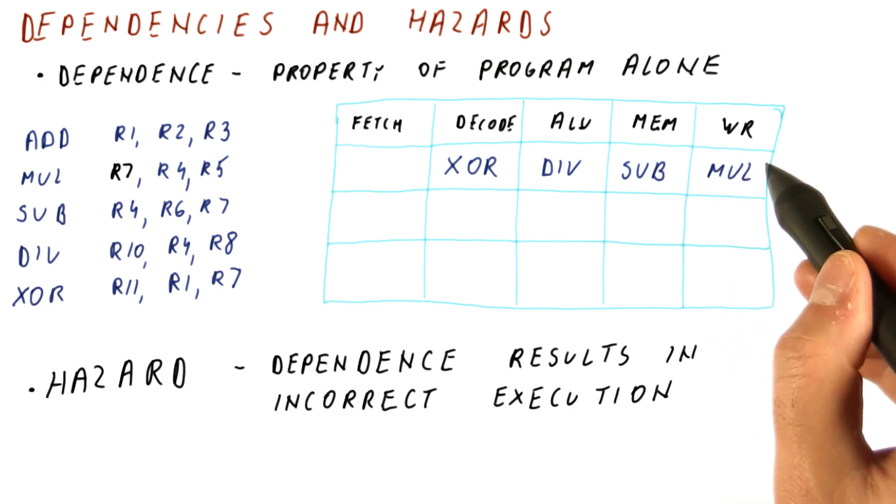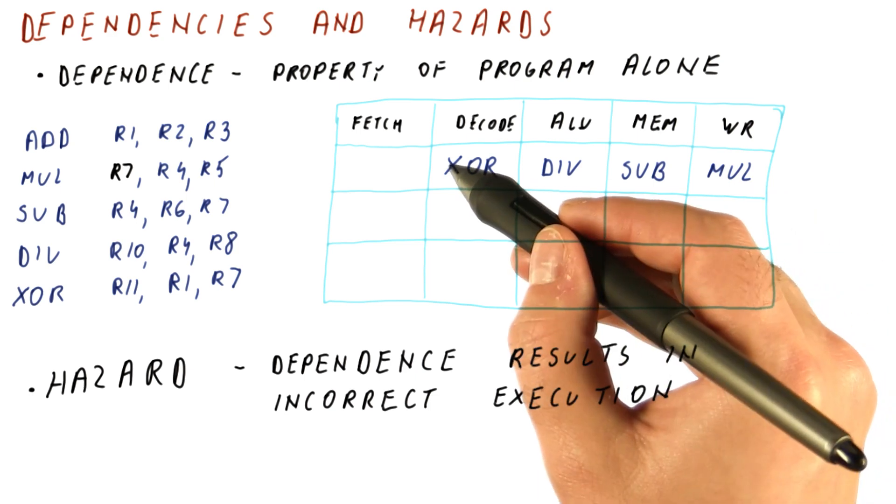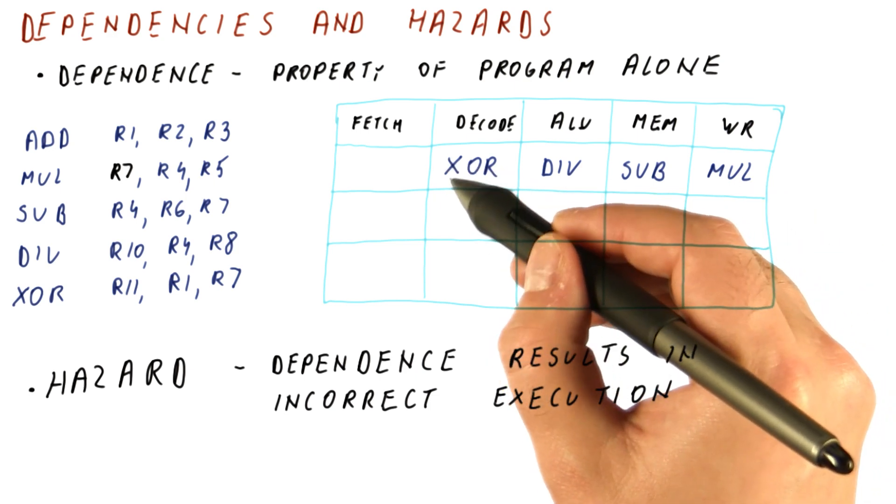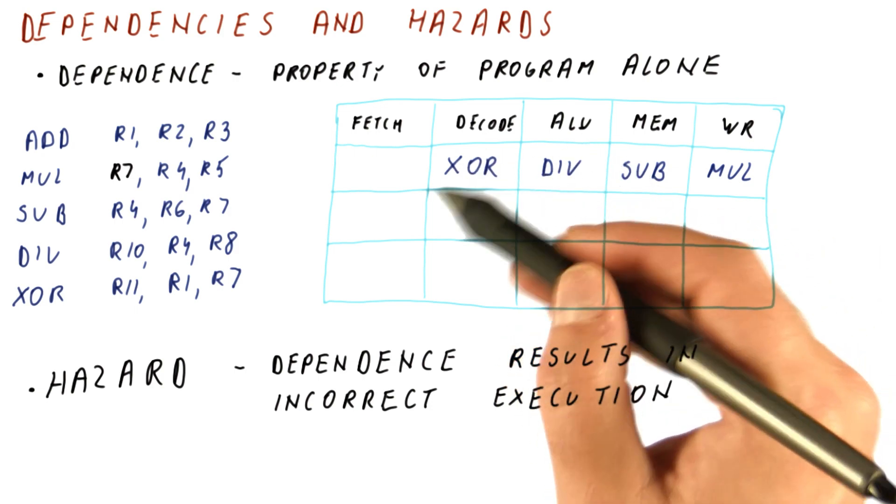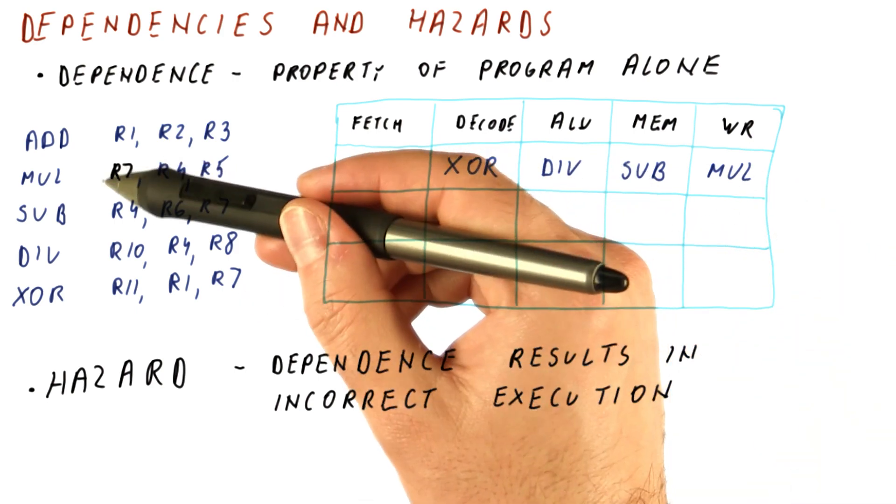So if this write completes near the end of the clock cycle and this read is happening near the beginning of the clock cycle, the XOR will not read the R7 produced by the multiply. In this pipeline, we can tell that a true dependence is not a hazard if there are three or more instructions in between the producing and the consuming instruction.